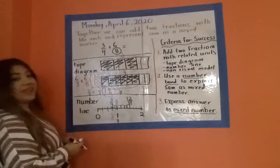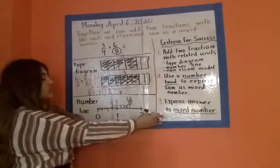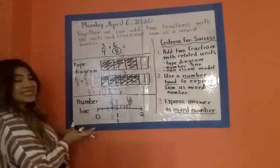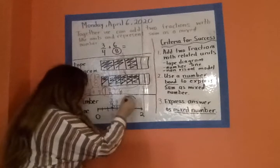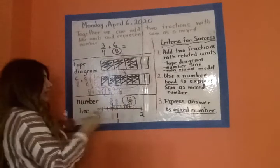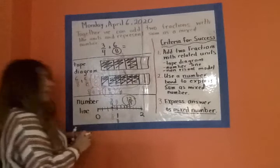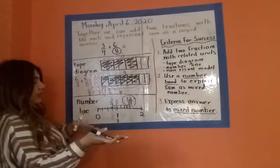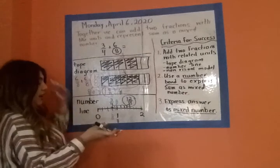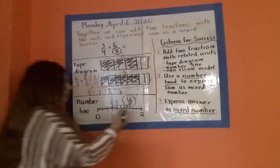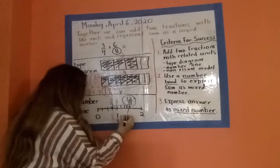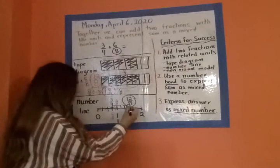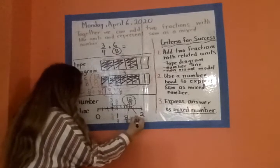Now we don't want to leave our twelve eighths expressed in this way. We do still want to express our answer or our sum as a mixed number. And so using my twelve eighths, I can then again use a number bond to better express how many wholes there are and if I have any fractional parts to it. And so again, twelve eighths becomes eight eighths, and this is just a representation of the work we already did, and then four eighths.